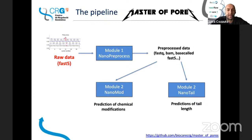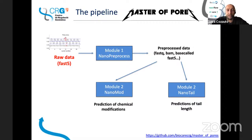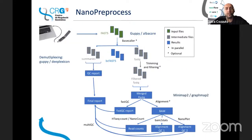So you have a first step that is pre-processing. Then the second step takes the output from the first module and gives you a prediction of chemical modifications using different tools. And the third module allows you to estimate the poly-A tail length. There will be more modules being developed. In the first module: you get the fast5 files from the machine, you can use different tools — Guppy or Albacore, for instance — for base calling. Then you can demultiplex using other tools, get summaries and a QC report that will be embedded in a final report.